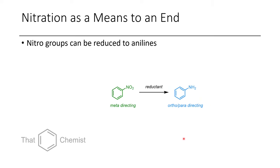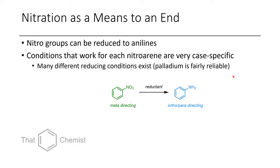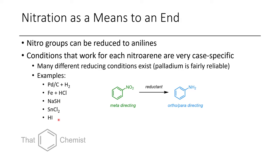One reason to install a nitro group is to use it as a means to an end in multi-step synthesis. A nitro group is a meta director, whereas an aniline is an ortho-para director. Various reductants can accomplish the conversion of a nitro group to an aniline. Most reducing conditions are fairly case-specific, but palladium on carbon with hydrogen is fairly reliable. Other examples include iron in elemental form with HCl, sodium hydrogen sulfide, tin(II) chloride, and hydrogen iodide.